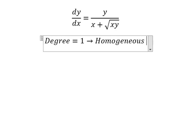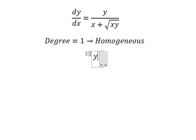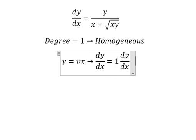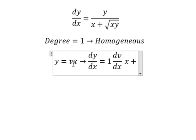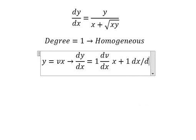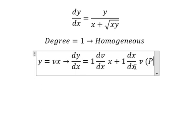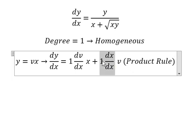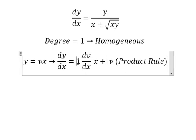Since the degree is one, this is homogeneous. I will substitute y equals vx. We need to take the derivative of both sides. Using the product rule, dy/dx equals x times dv/dx plus v.